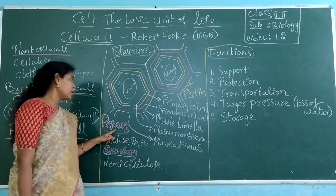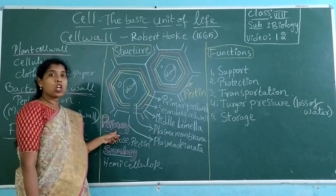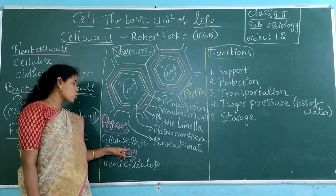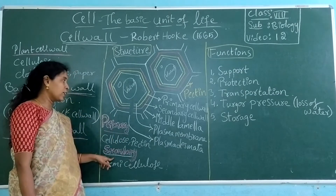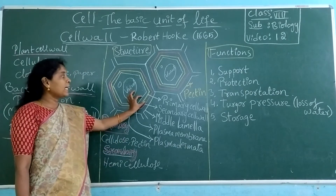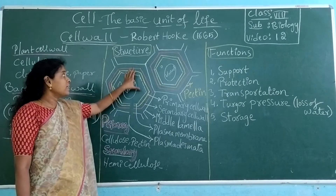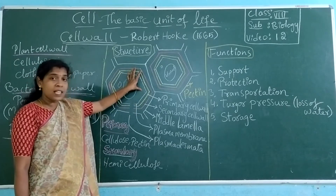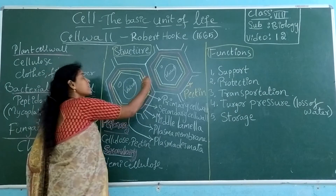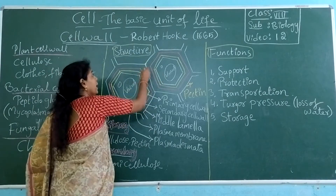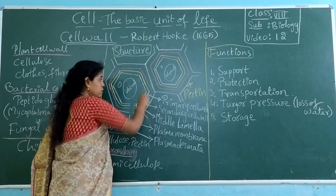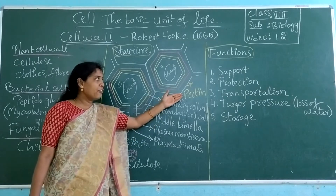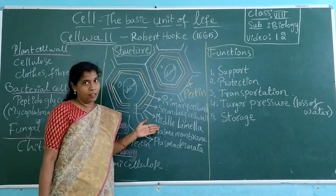The primary cell wall also has pectin. This pectin helps to attach the primary layer to the secondary cell wall. And this cell wall of one cell is attached to another cell by the middle lamella, which is made up of pectin.